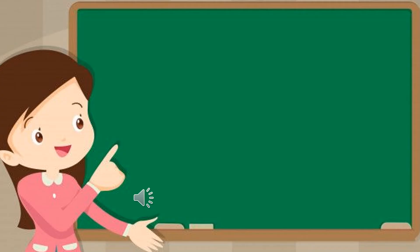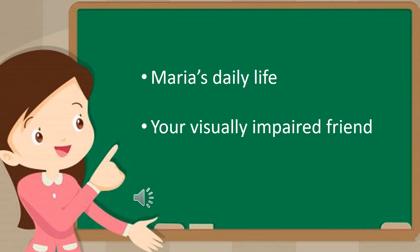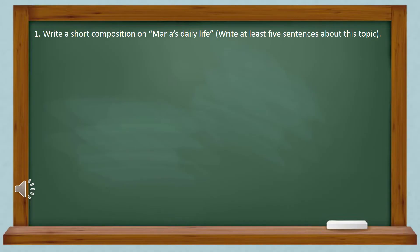Now, from the help of this passage, you have to write a short composition. You can be asked to write a short composition on Maria's daily life or your visually impaired friend. You have to write at least five sentences, but you can write more than five sentences. You cannot write less than five sentences. Now let's see how to write this kind of short composition.